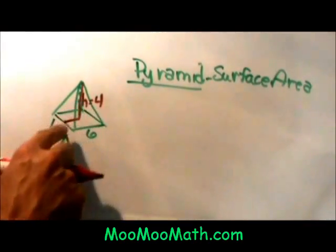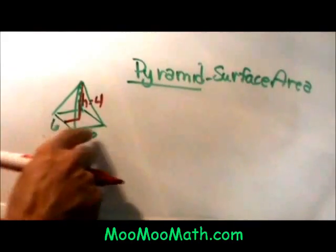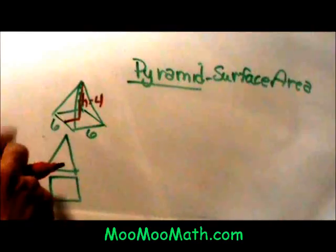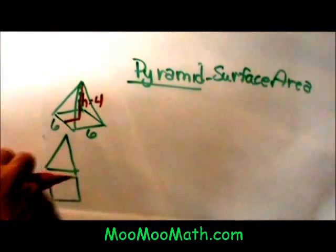What is a pyramid? A pyramid is a three dimensional figure with a base and an apex. Here is a square pyramid, and a pyramid is named by the shape of the base.